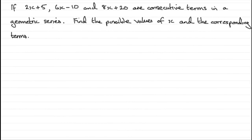Hi, welcome to another example in my series on geometric series or geometric sequences. What we've got here is a typical kind of question that you could find about consecutive terms. We've got: if 2x plus 5, 6x minus 10, and 8x plus 20 are consecutive terms in a geometric series, find the possible values of x and the corresponding terms.